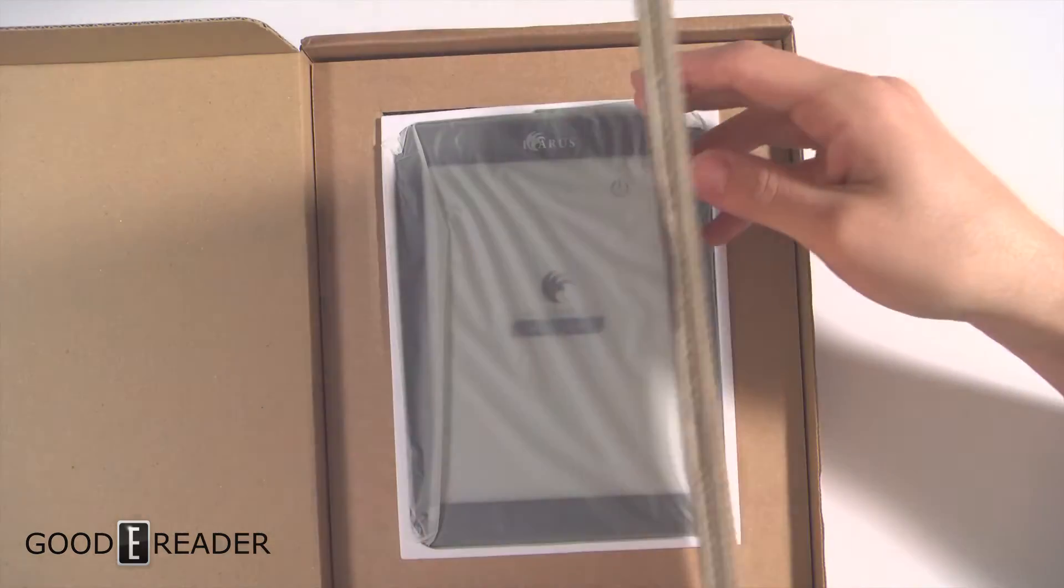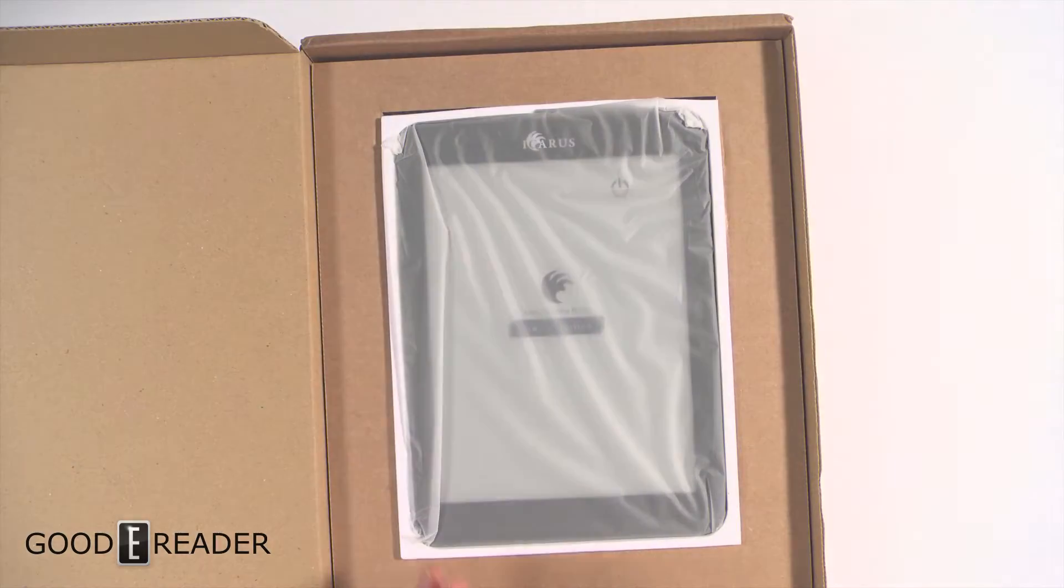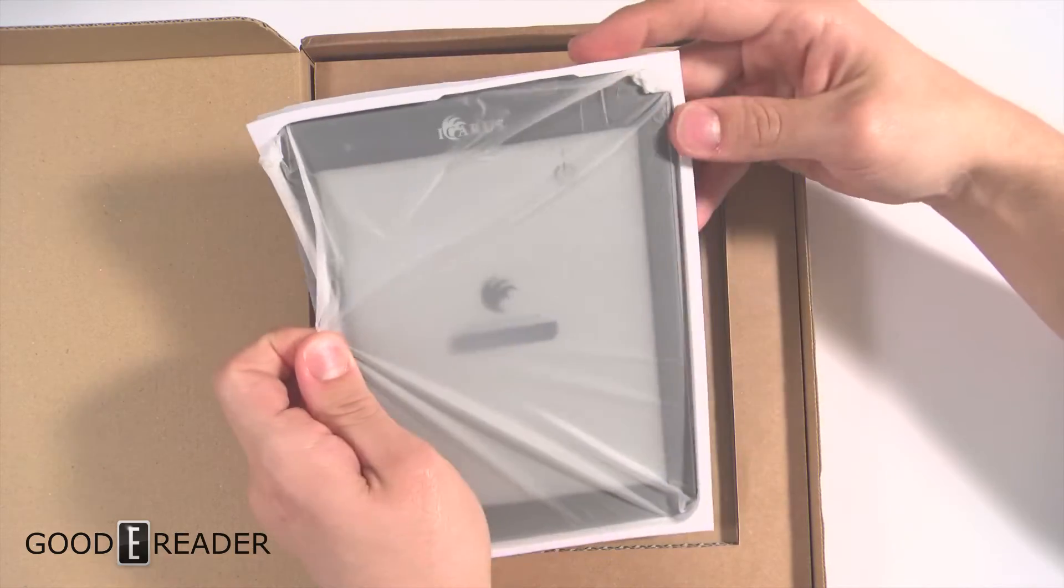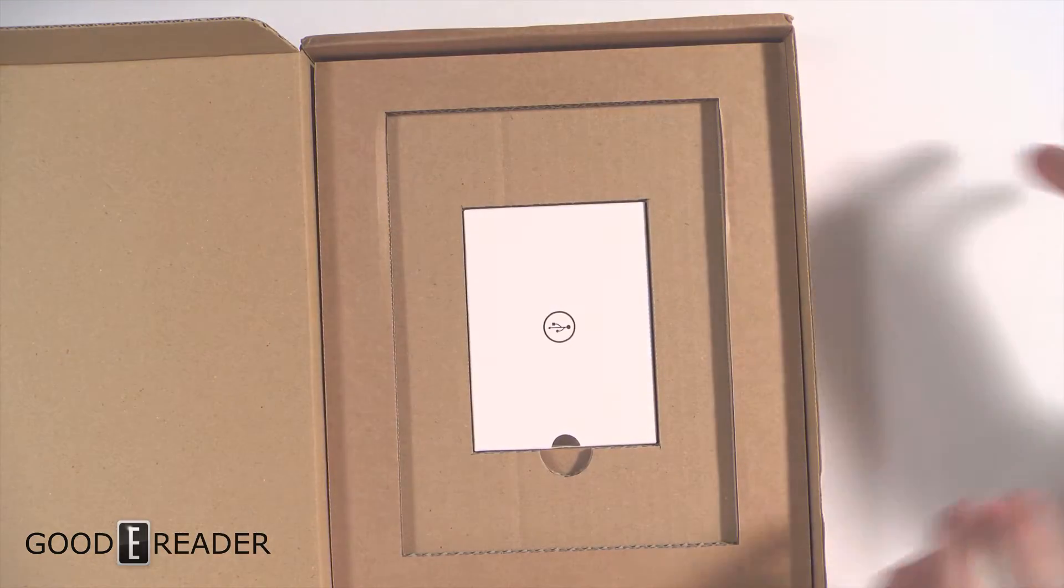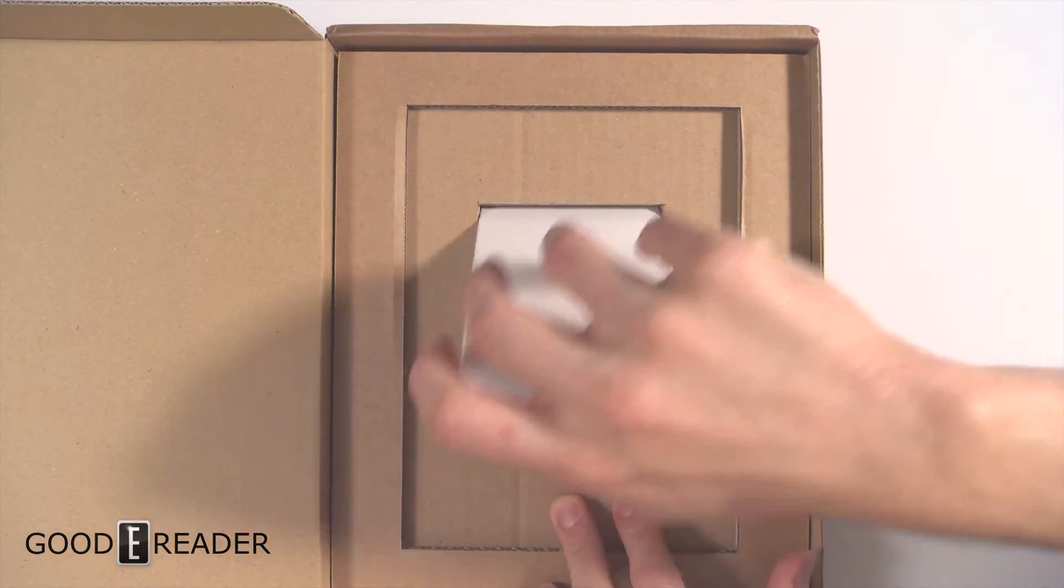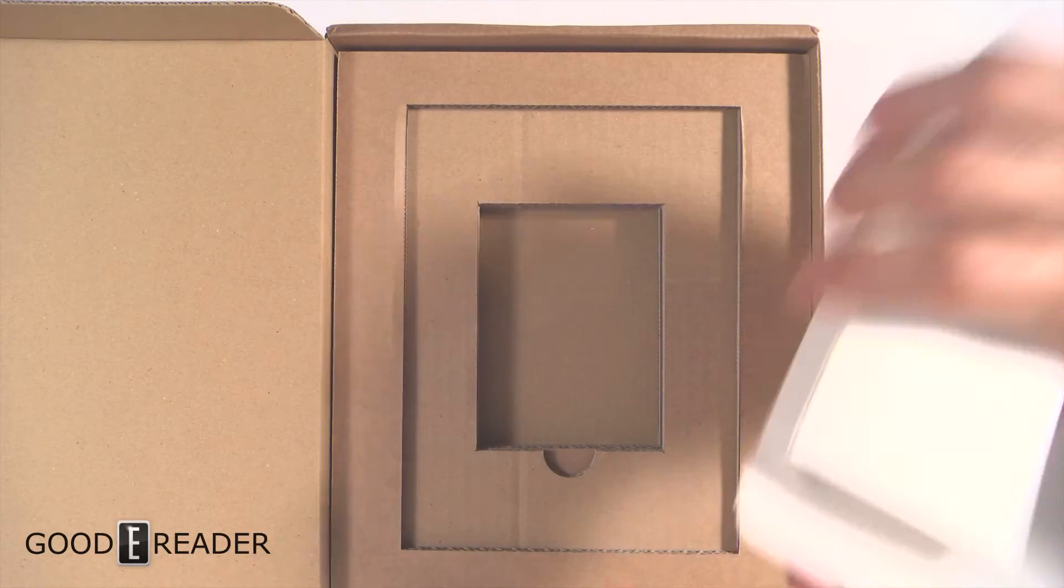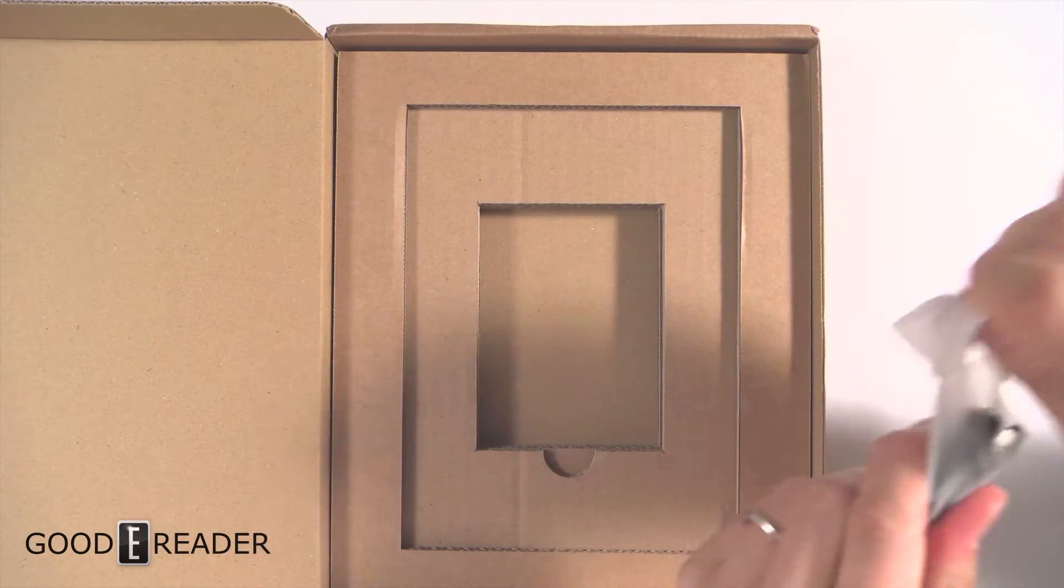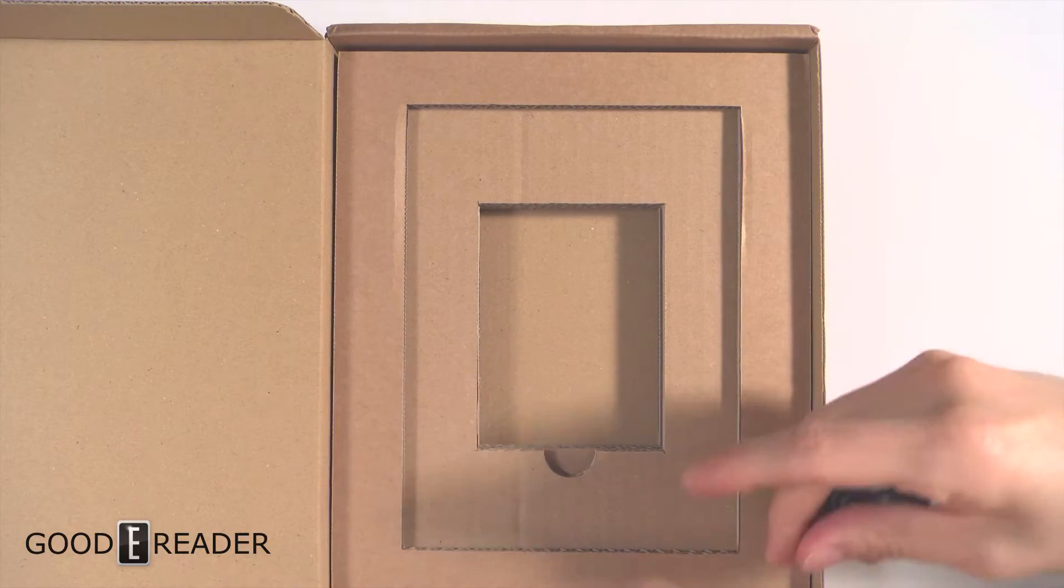Again, corrugated cardboard here and the e-reader itself. We'll put that off to the side because we're going to explore the box a little bit more. On the very bottom you have USB cables. Slide that out, rip that open, and we have a micro USB cable.